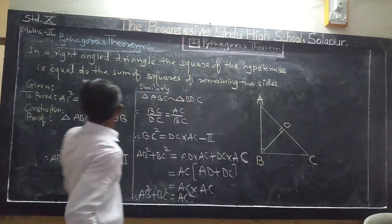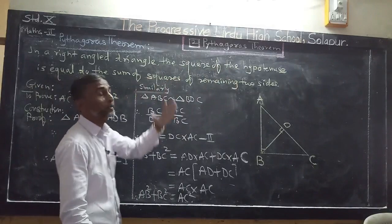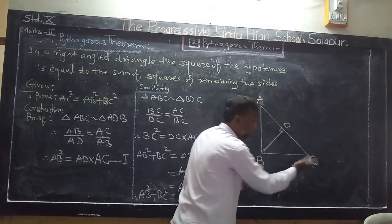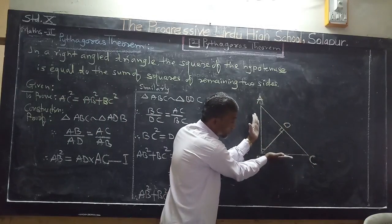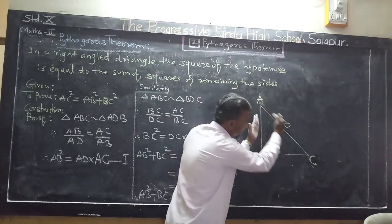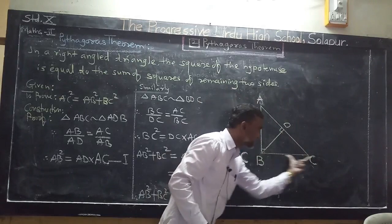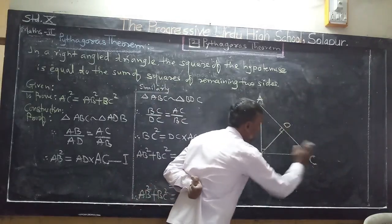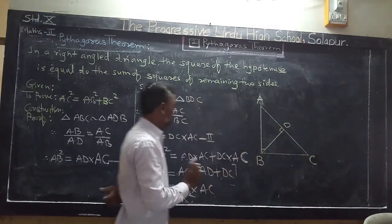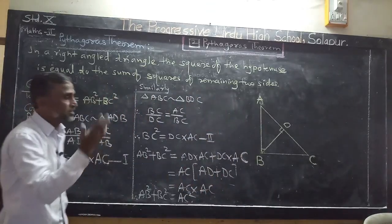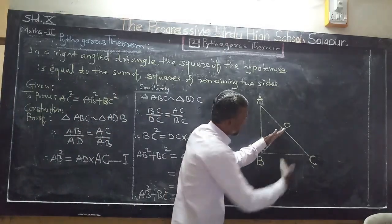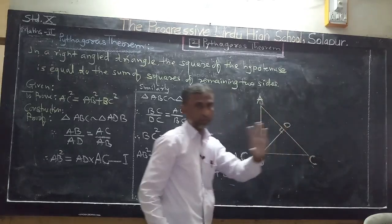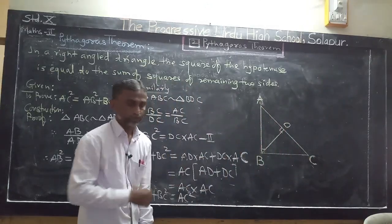What we have to prove: AC² = AB² + BC², where AC is the hypotenuse and AB, BC are the remaining two sides. Construction: draw segment BD perpendicular to hypotenuse AC.